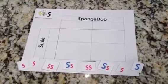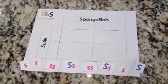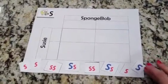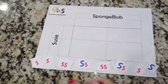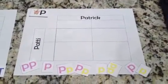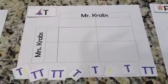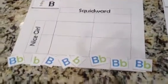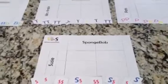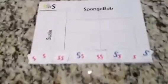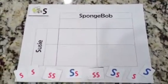After you have cut apart your pieces, you can separate them so that you can see each one of the letters along the bottom. Notice over here I have my Patrick, Mr. Krabs, and Squidward. I kind of have them off to the side a little bit, because we're just going to work one at a time. Our first example, of course, is SpongeBob.